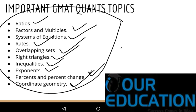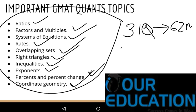In the GMAT quantitative section, there will be 31 questions within 62 minutes — approximately 2 minutes per question. If you have clarity about which topics to focus on, your preparation life will be much easier.